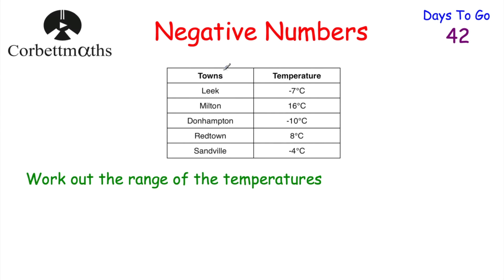Let's have a look at our next question. We've got five towns with their temperatures: Leek at negative 7°C, Milton at 16°C, Donhampton at negative 10°C, Redtown at 8°C, and Sandville at negative 4°C. The question says: work out the range of the temperatures. Feel free to press pause and work that out now. To work out the range, we do the biggest take away the smallest — the difference between the highest and lowest temperatures. The highest temperature is 16°C and the lowest is negative 10°C at Donhampton.